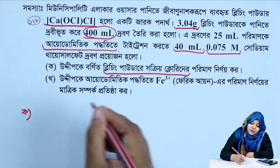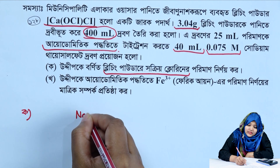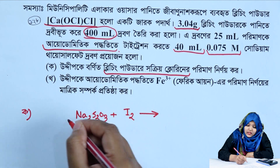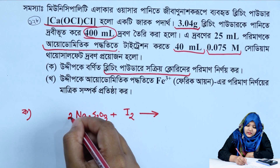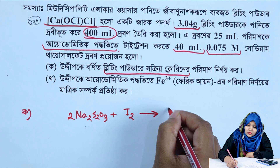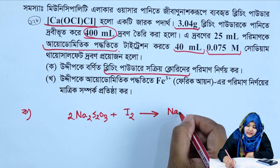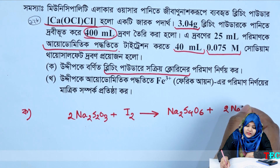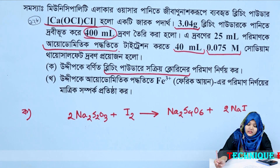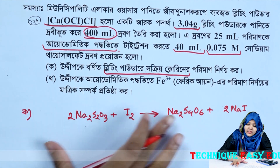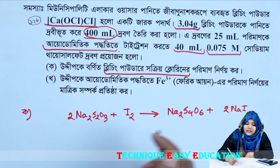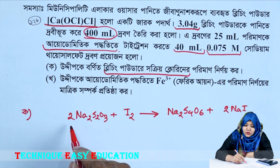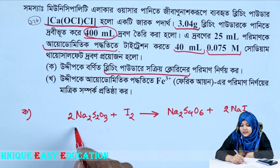We have to find the results of sodium thiosulfate, and we can find the results of sodium thiosulfate with iodate. I already have a list: 2-0 sodium thiosulfate, and again 2-0 sodium thiosulfate.